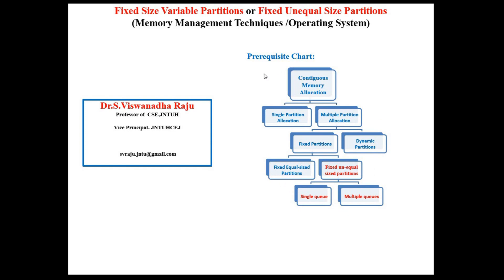Look at the prerequisite chart. There are two different types of memory allocation methods available. One is contiguous memory allocation and the second one is non-contiguous memory allocation, which we will discuss in future. Contiguous memory allocation is classified into two categories: one is single partition allocation and the other is multiple partition allocation. Multiple partition allocation is very important in a multiprogramming concept.